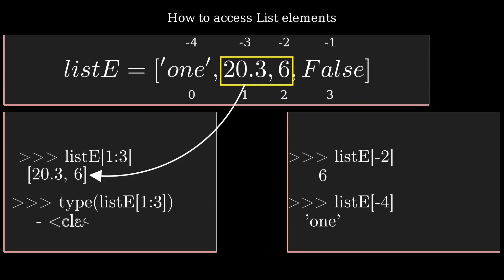The slicing method will return a new list, whereas if you fetch a single element like 20.3 from the list variable, it will return 20.3 with the float data type and will not return a new list. But slicing method will return a new list.